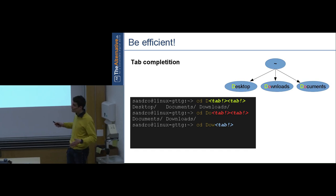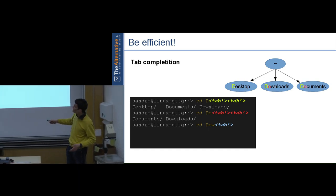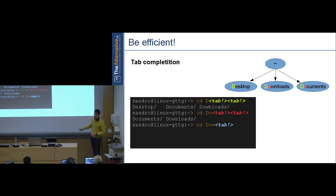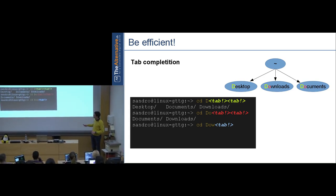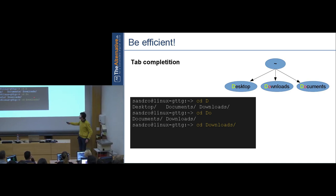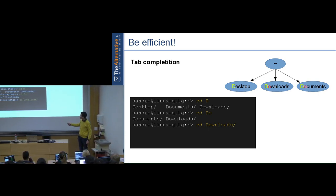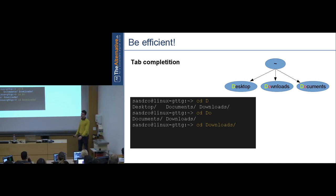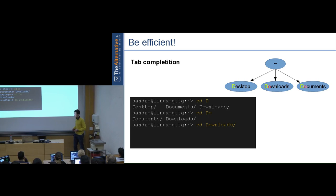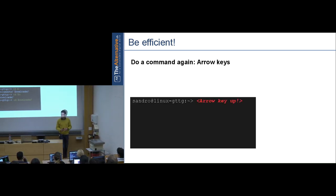Type 'cd dow' then Tab and it completes to 'downloads'. If Tab doesn't work once, press it twice — if still nothing, there's no match. Your Tab key is soon going to be the most-used button on your keyboard.